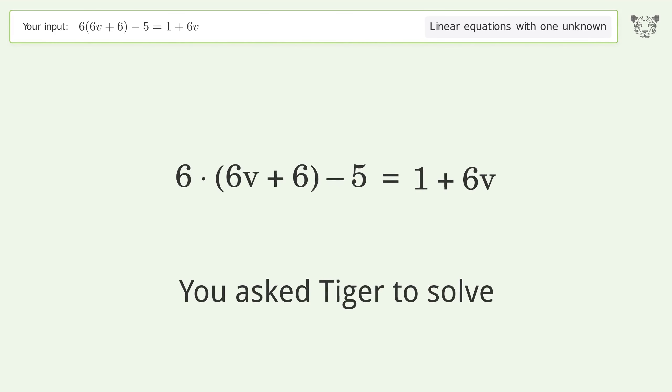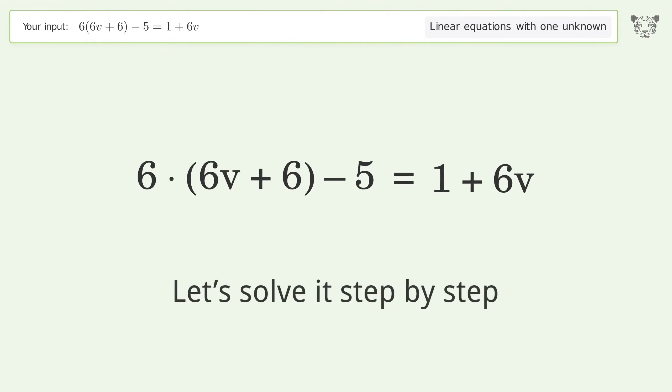You asked Tiger to solve this. It deals with linear equations with one unknown. The final result is v equals negative one. Let's solve it step by step.